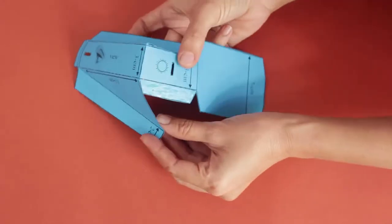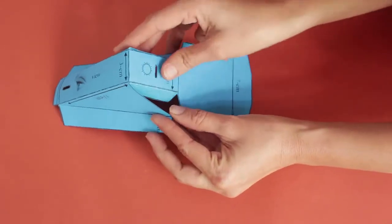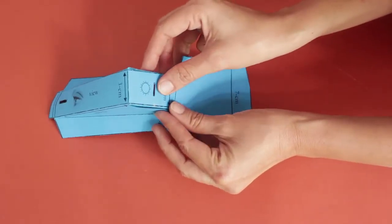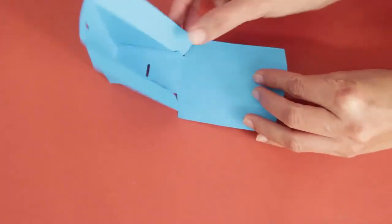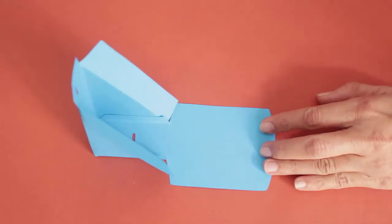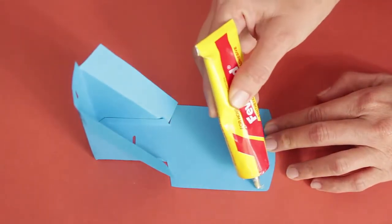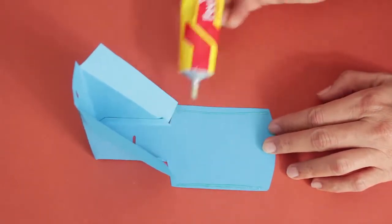Now the rectangular piece is the base. Apply glue on the margins of the space and stick it to the triangular box.